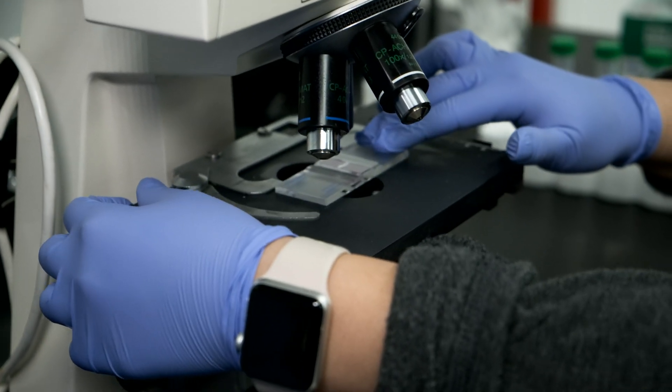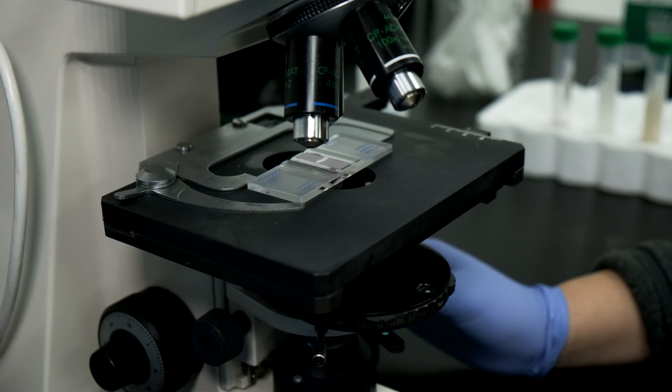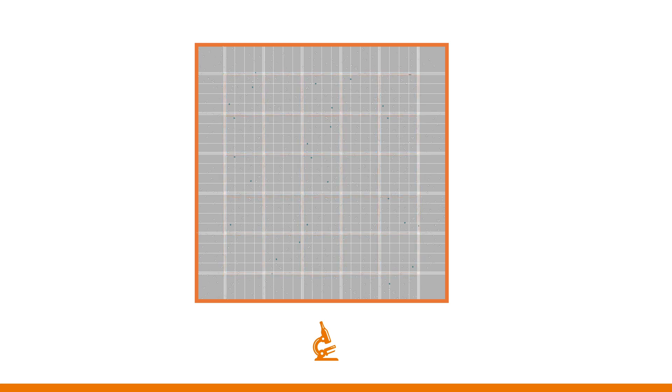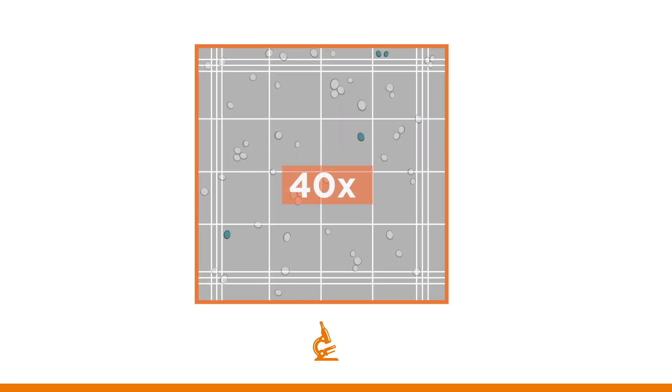Place the hemocytometer on the microscope stage and focus on the 10x objective. A 5 by 5 grid should now be in view with yeast cells spread out evenly. Once focused, move on to the 40x objective.